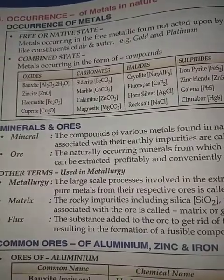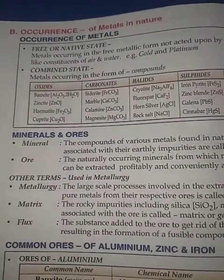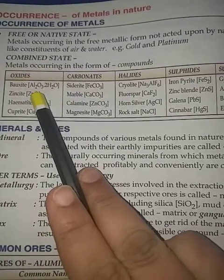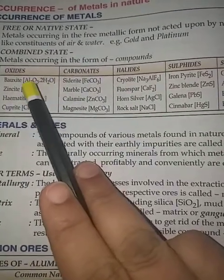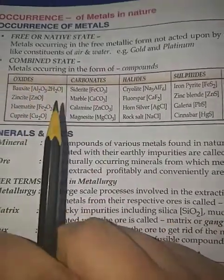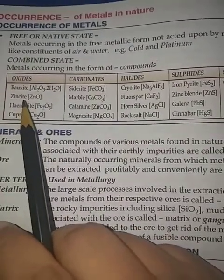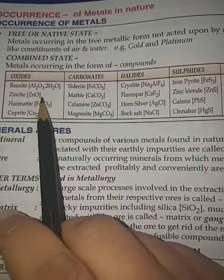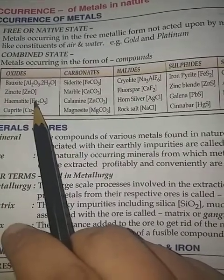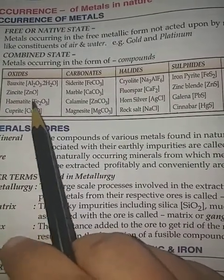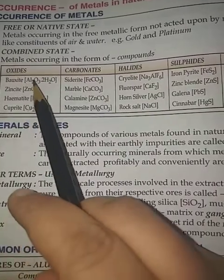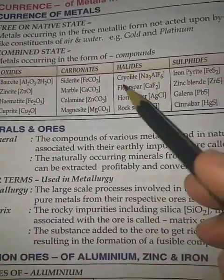In combined state, many metals are found in their compound form. For example, bauxite has the formula Al₂O₃·2H₂O and is an ore of aluminium. Zinsite (ZnO) is also found in combined state. Hematite, an oxide of iron, has the formula Fe₂O₃. Cuprite is Cu₂O. These metals are present in combined state.